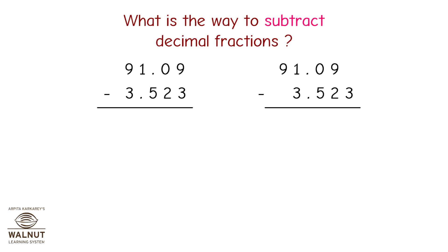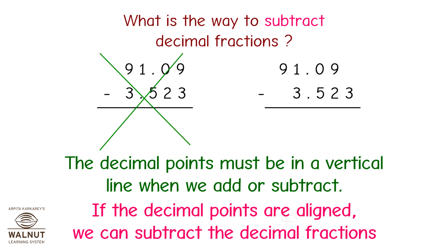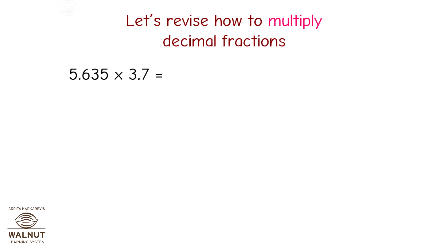Let's subtract these decimal fractions: 91.09 minus 3.532. The decimal points must be in a vertical line when we add or subtract. The first arrangement of numbers is wrong. If the decimal points are aligned, we can subtract the decimal fractions. In the second arrangement, the decimal points are exactly one below the other, so we can subtract them. The answer is 87.567.